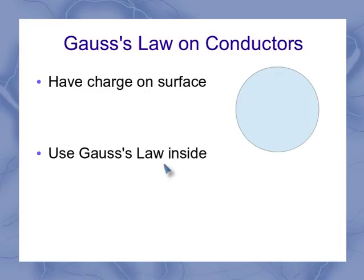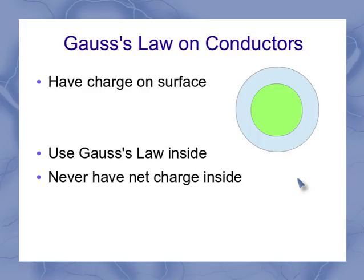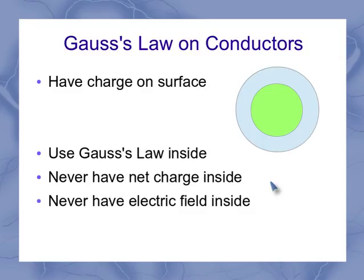So let's use Gauss's law on the inside. I've got a little Gaussian surface here placed on the inside. Remember, Gauss's law depends on how much charge is inside that. And I'm never going to have a net charge inside it. All the unbalanced charges are on the outside edge of the conductor. So in here in the middle, I've got no net charge, and that means I've got no electric field inside.